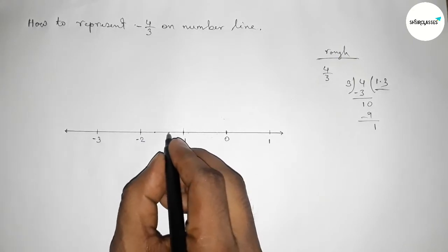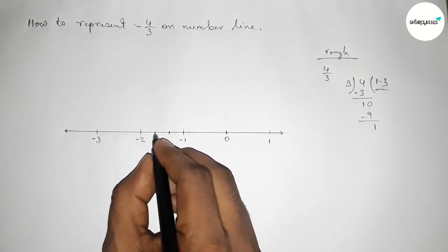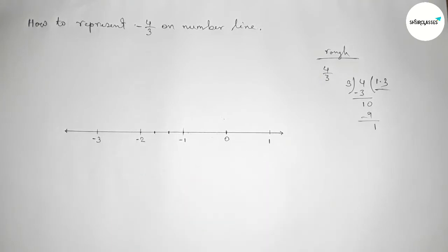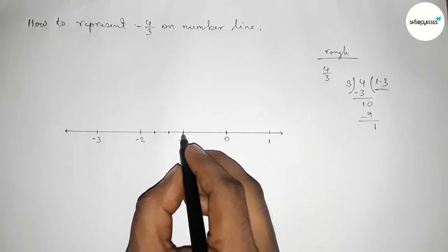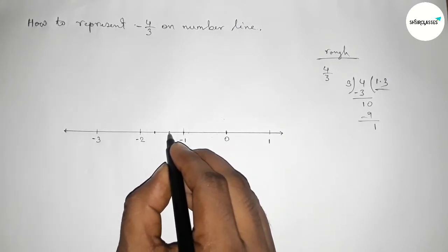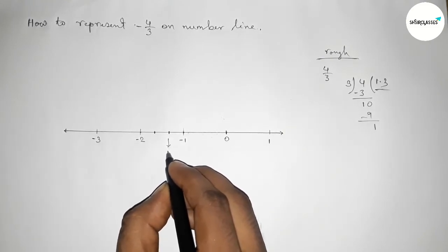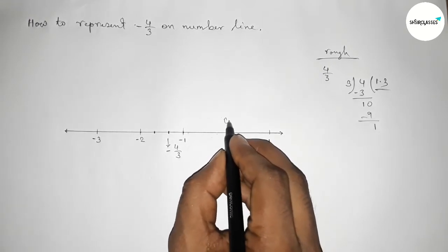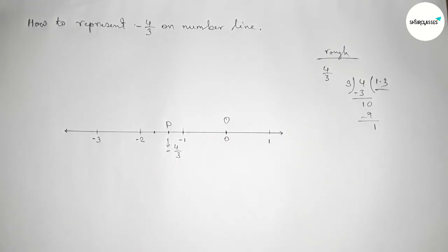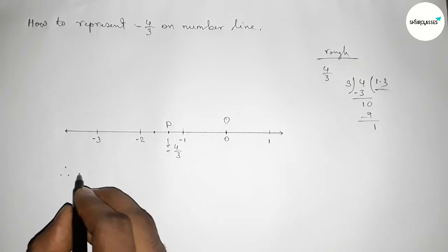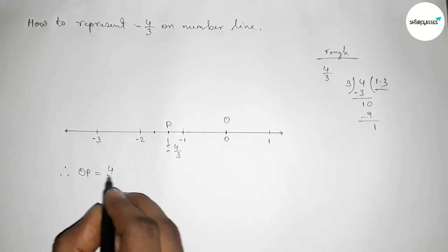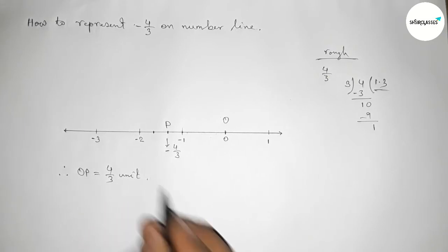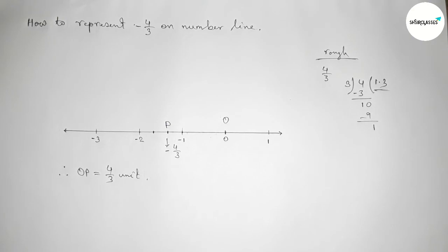By this way we divide the length between minus one and minus two. This point is zero, this is minus three by three, and this one is minus four by three — so this is minus four by three on the number line. Taking point O at the origin and point P at minus four by three, therefore the length OP equals four by three units. The length is taken as positive because distance is always positive. That's all — thanks for watching. If this video is helpful, please like and share.